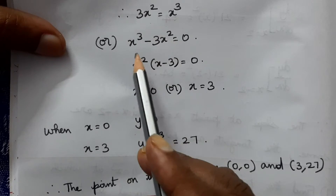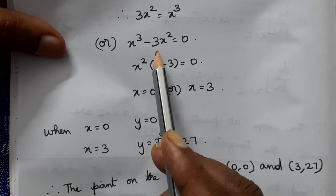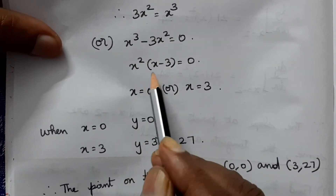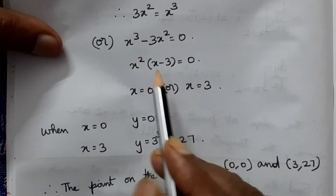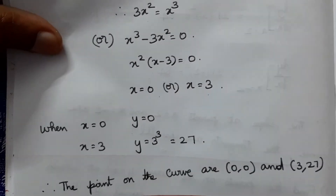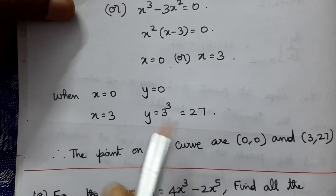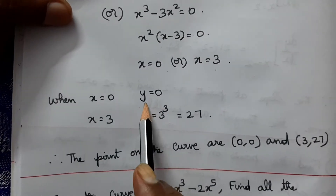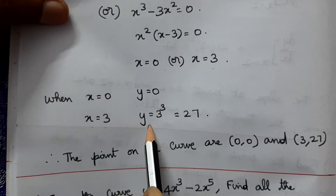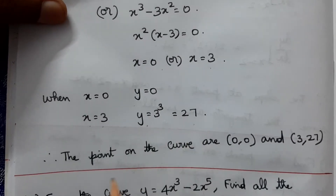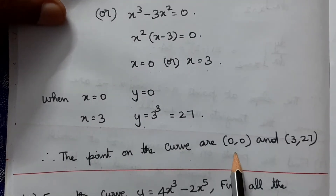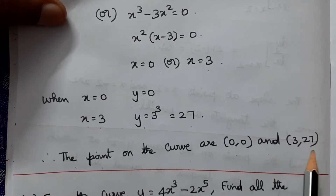Factoring: x²(x - 3) = 0, so x = 0 or x = 3. When x = 0, y = 0. When x = 3, y = 27. Therefore the points on the curve are (0, 0) and (3, 27).